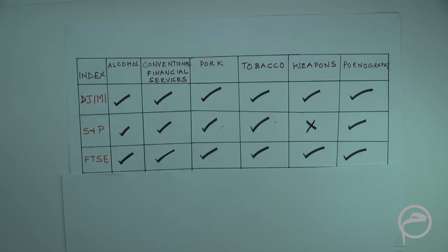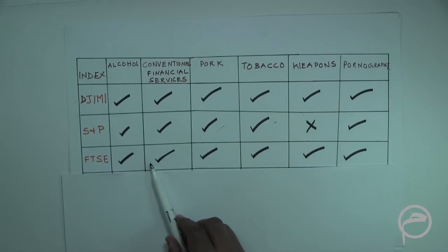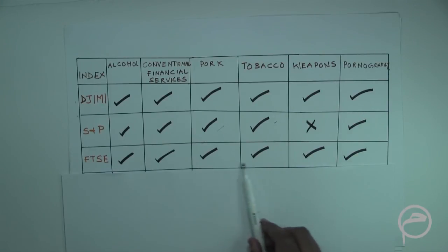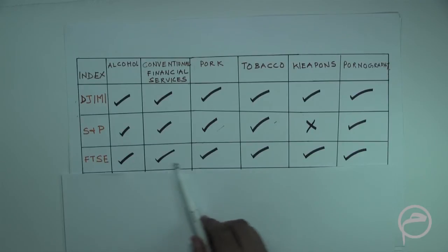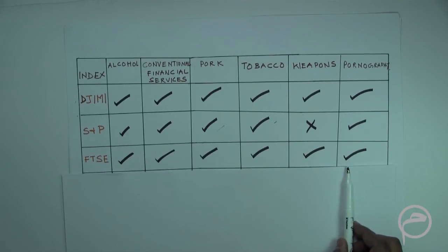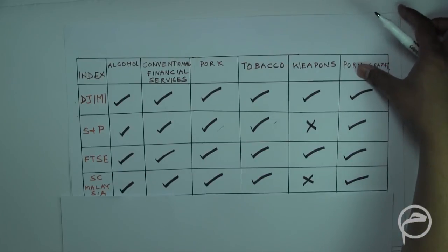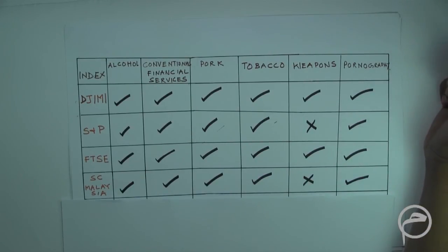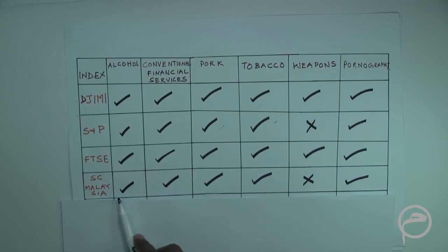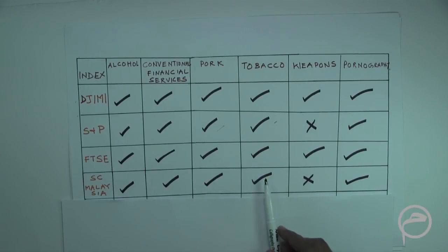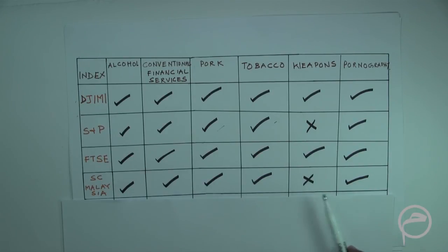For FTSE, all companies involved in the six screening parameters — alcohol, conventional financial services, pork, tobacco, weapons, and pornography — are considered screened. For the Securities Commission Malaysia, alcohol, conventional financial services, pork, and tobacco are all prohibited, weapons are allowed, and pornography is prohibited.